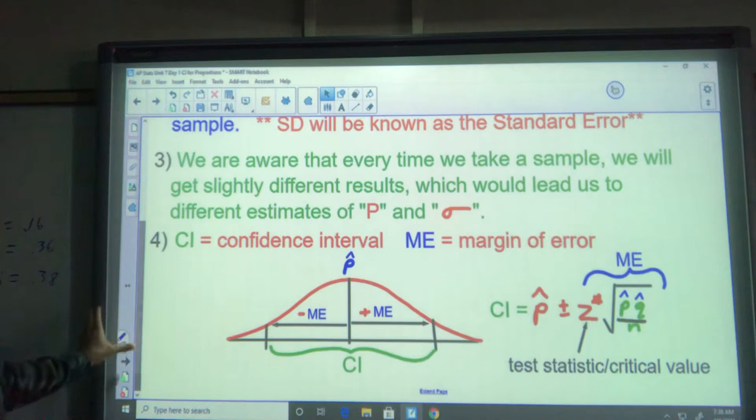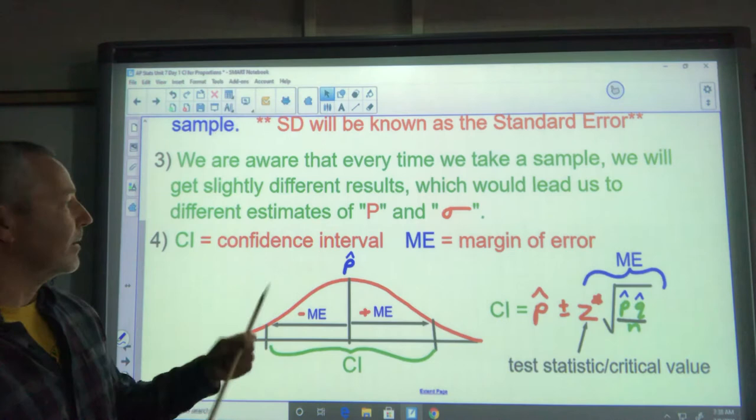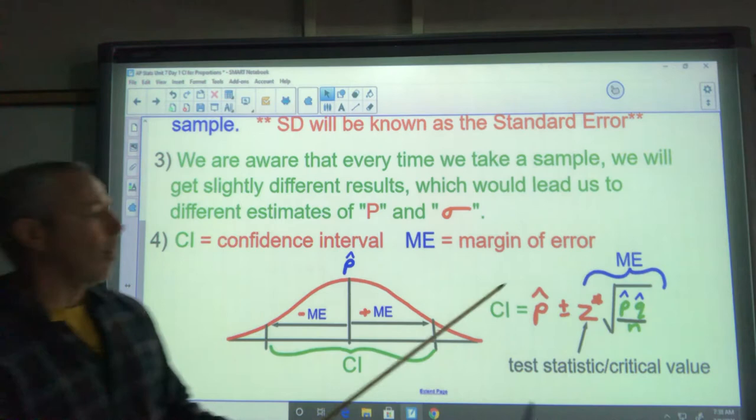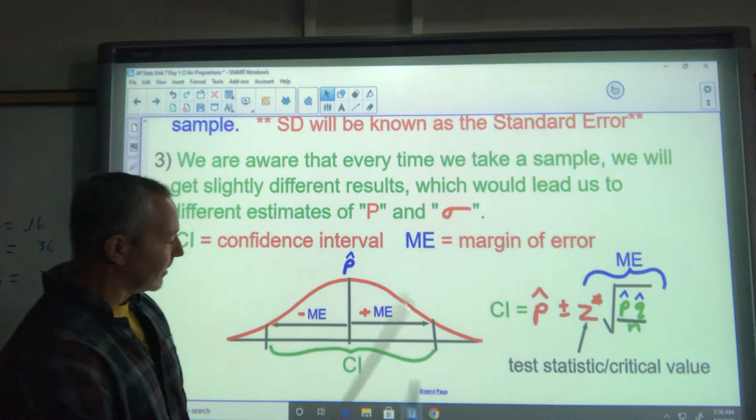We are aware that every time we take a sample, we'll get slightly different results, which would lead us to different estimates of P and sigma. CI stands for confidence interval. ME stands for your margin of error. Simply put, your confidence interval is P hat plus or minus the margin of error.